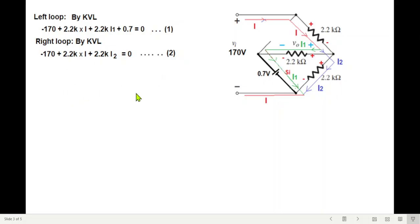Now we'll add both of these. So adding this, here we are getting I1 plus I2. And we know I1 plus I2 is I. So solving, we find the current I to be 339.3 divided by 6.6K.